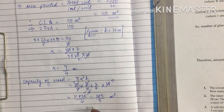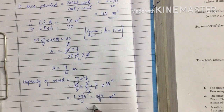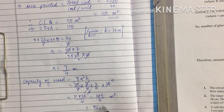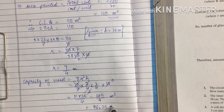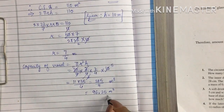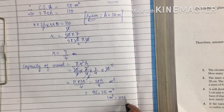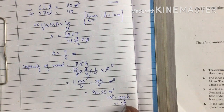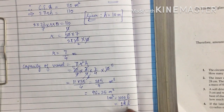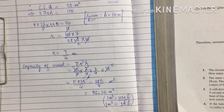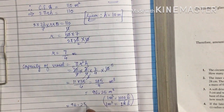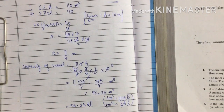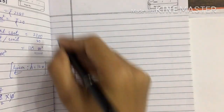After converting to decimal, the answer comes out to be 96.25 meter cube. We know 1 meter cube is equal to 1000 liters, and since 1 kilo represents 1000, 1 meter cube is 1 kiloliter. So this can also be written as 96.25 kiloliters. Now we will do question number 6.